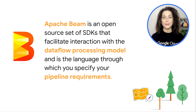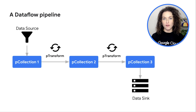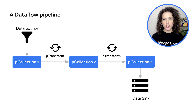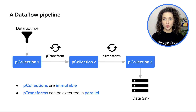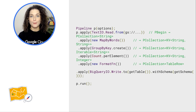Alternatively, Apache Beam is an open source set of SDKs that facilitate interaction with the overall data processing model, and is the language through which you specify your Dataflow processing pipelines. Within the Beam SDK, you specify your pipeline as a data source and a data sink. Between these, you perform a series of p-transforms, which are operations or functions performed on objects called p-collections. Each p-collection is immutable and p-transforms can be executed in parallel. Here's a short example of what that might look like for a small series of transformations using a Cloud Storage source and a BigQuery sink. Notice that this is specified in Java, but Beam also supports Python and Go.